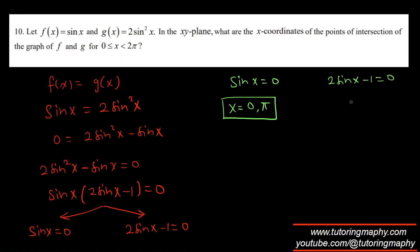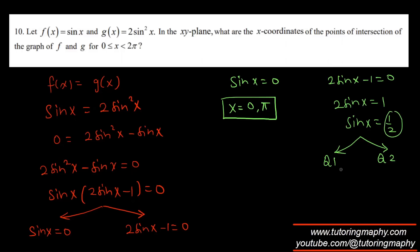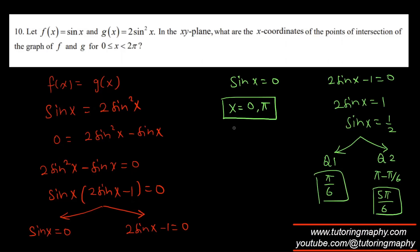From 2sin(x) − 1 = 0: sin(x) = 1/2. Sine is positive in quadrant 1 and quadrant 2. The reference angle is π/6. Quadrant 2 gives π − π/6 = 5π/6. So the four total solutions are x = 0, π, π/6, and 5π/6.